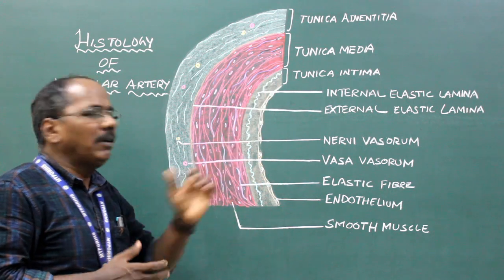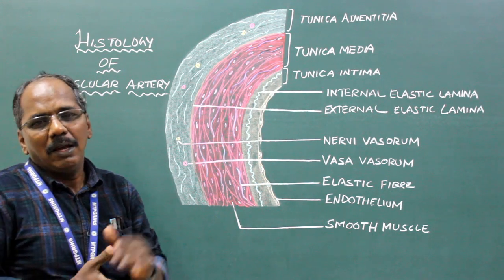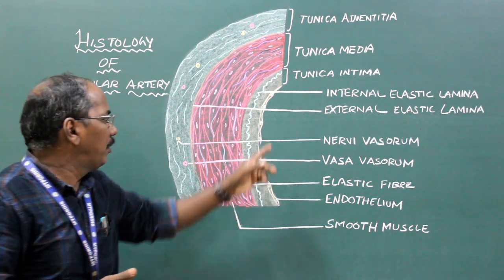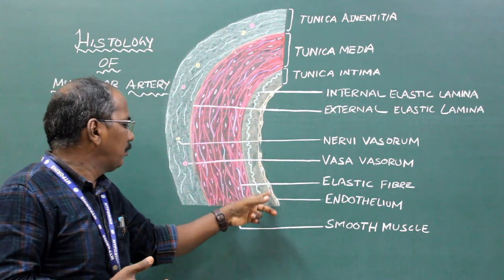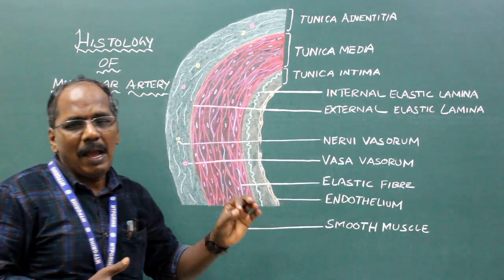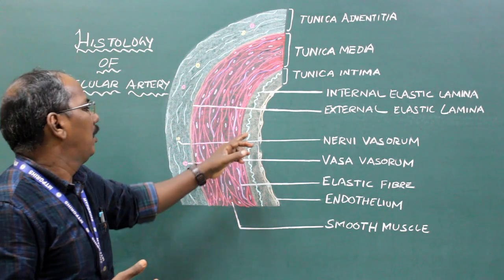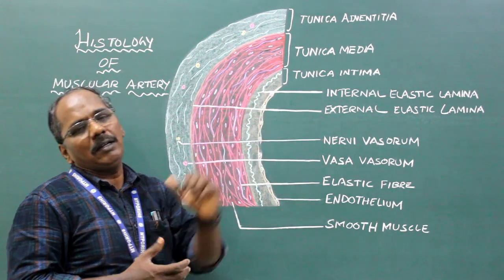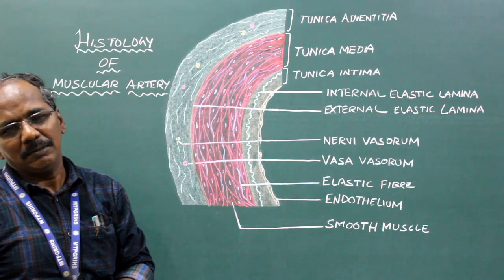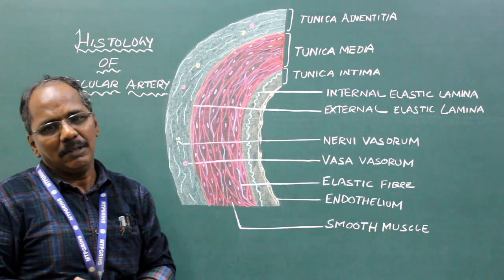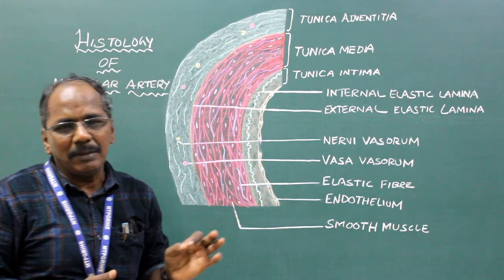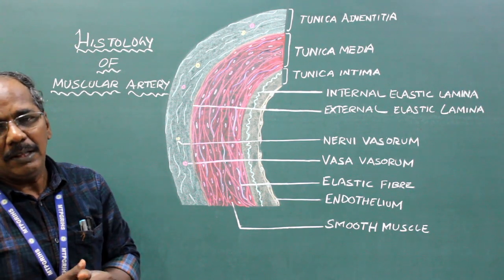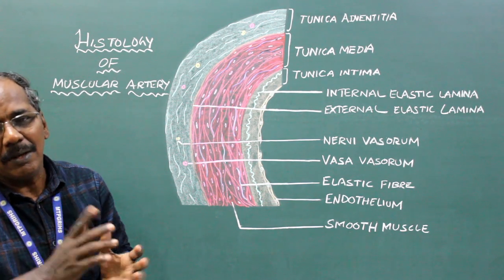Tunica Intima is the innermost layer which is made up of endothelium and internal elastic lamina. The endothelium is nothing but the simple squamous epithelium lying in the lumen of the blood vessels.